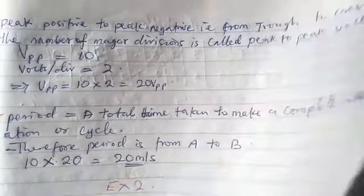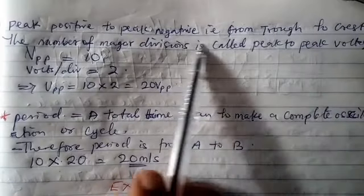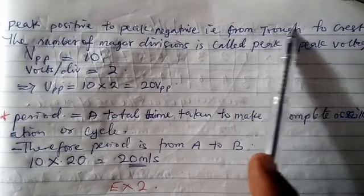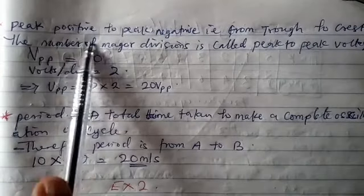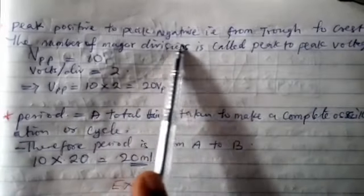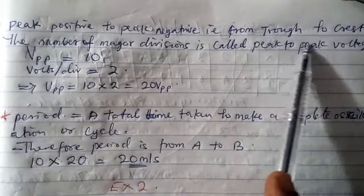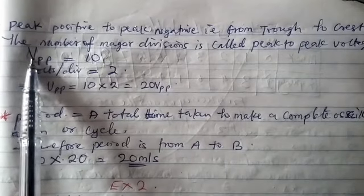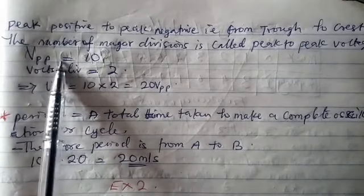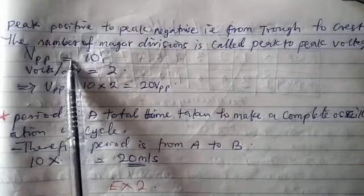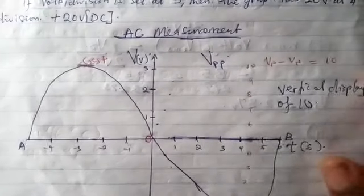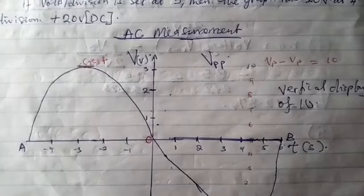We said that peak-to-peak voltage is from trough to crest. The number of major divisions gives what is called the peak-to-peak voltage, and is denoted V sub double P. Remember what we had before when measuring peak-to-peak voltage — we said that we had 10, that is 10 divisions.